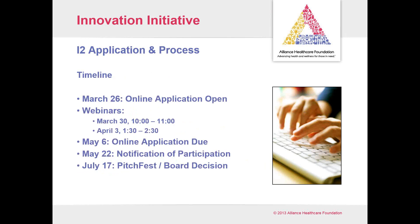In terms of the timeline, the application opened last week on the 26th. I've conducted two webinars — one earlier this week and then this one today. Applications are due online on May 6th — they are on our website under grants. On May 22nd the program committee meets and we will notify those that are participating. Typically we receive 20 to 25 proposals each year; probably a handful — maybe three or four — get eliminated because they don't rise to the level of innovation we're looking for, typically being less than $100,000 proposals.